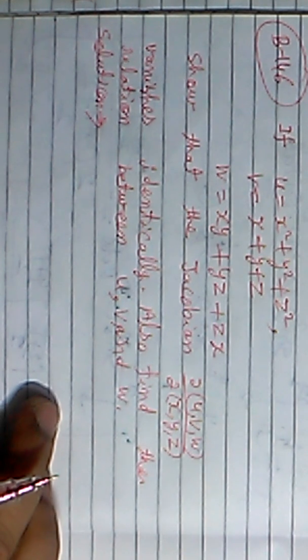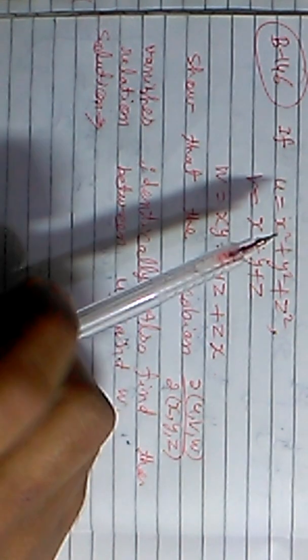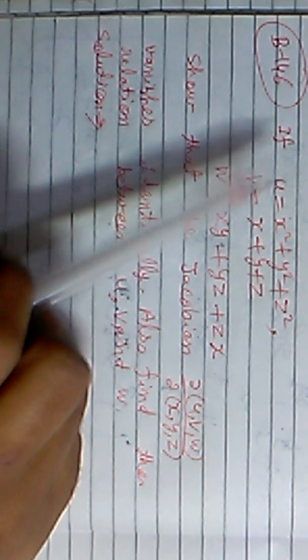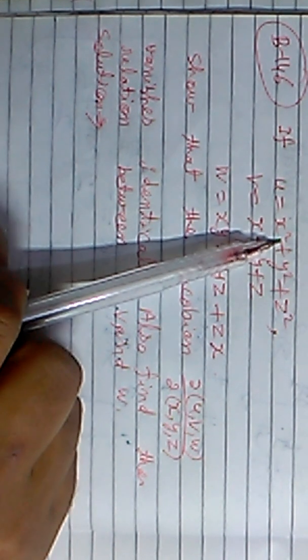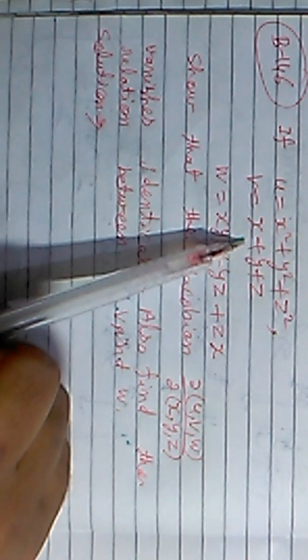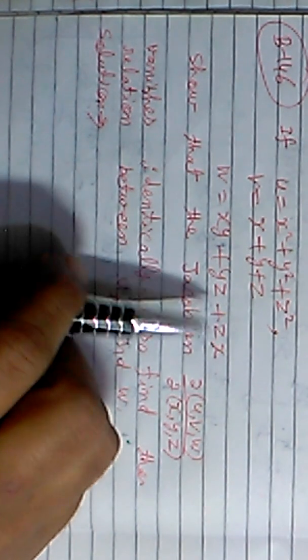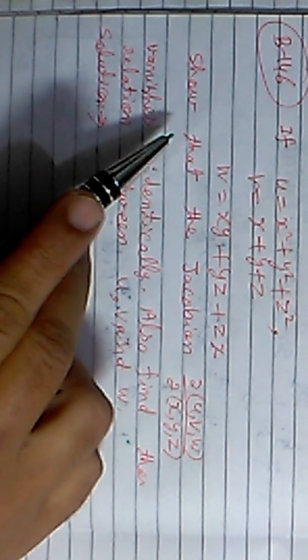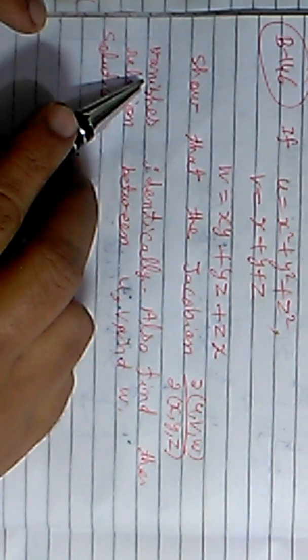Bismillahirrahmanirrahim. This video is related to the Jacobian chapter of differential calculus. If u = x² + y² + z², v = x + y + z, and w = xy + yz + zx, show that the Jacobian of u, v, w with respect to x, y, z vanishes — that is, it becomes zero identically.